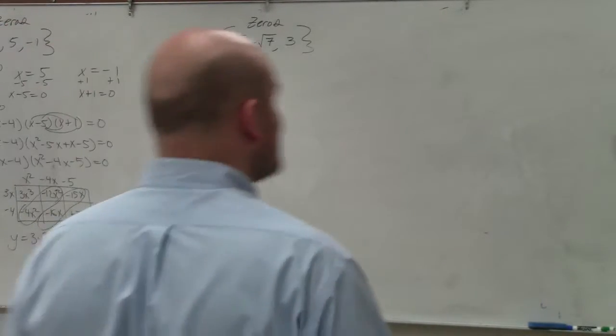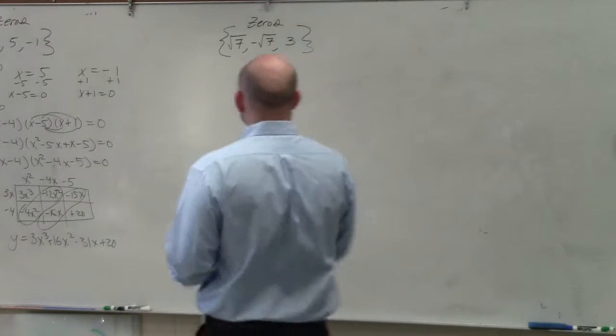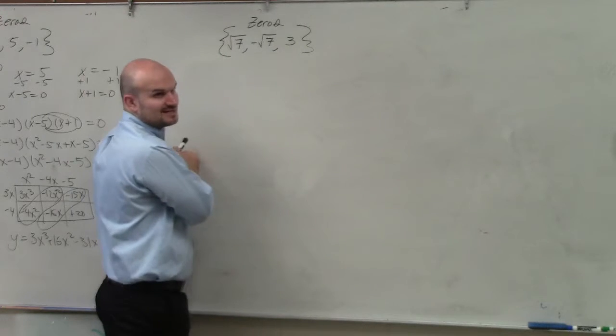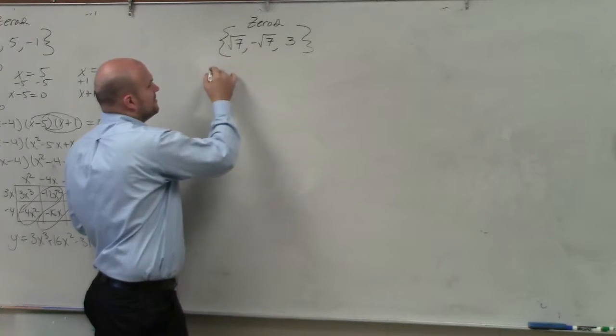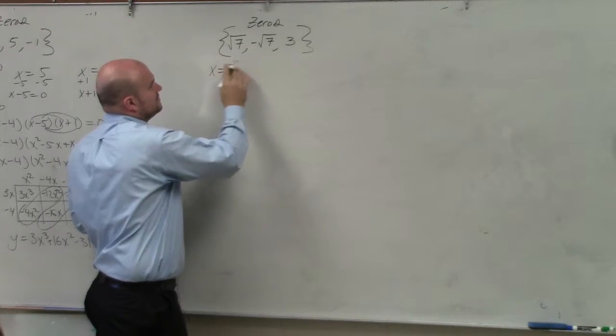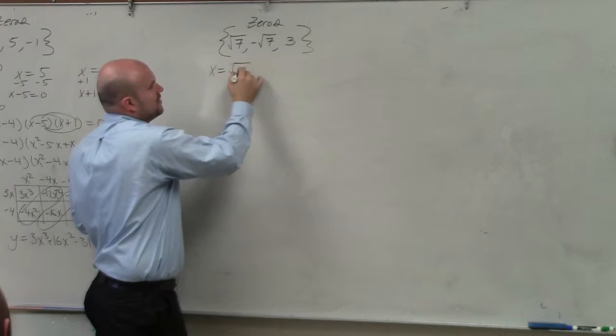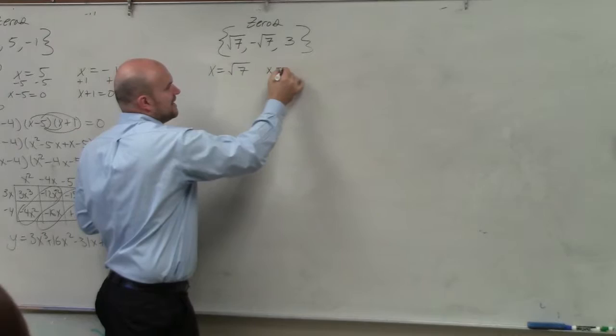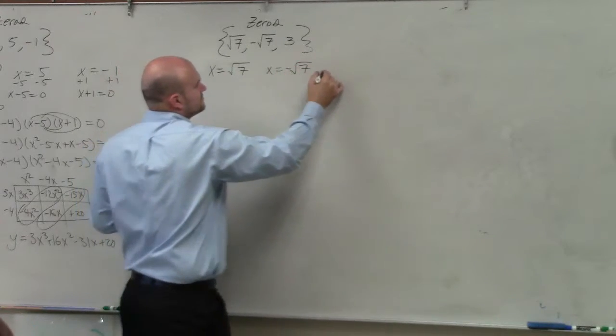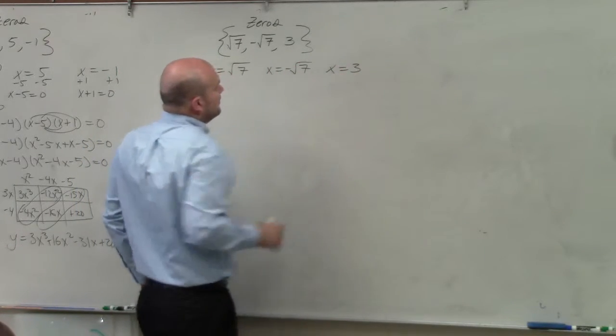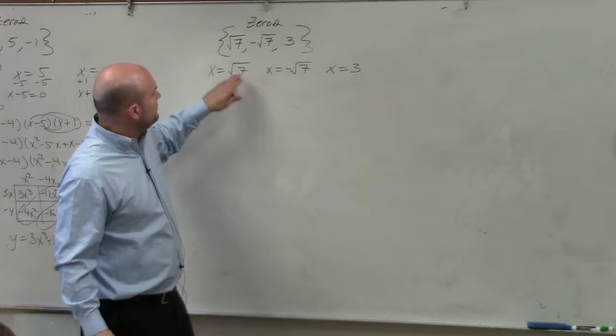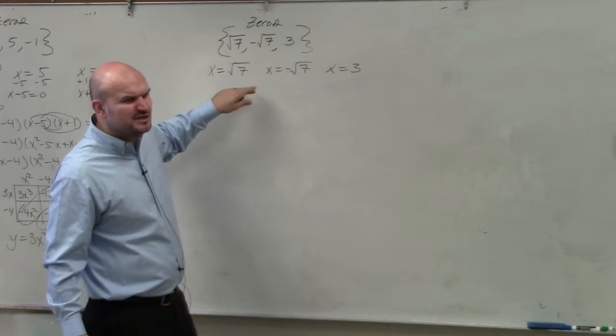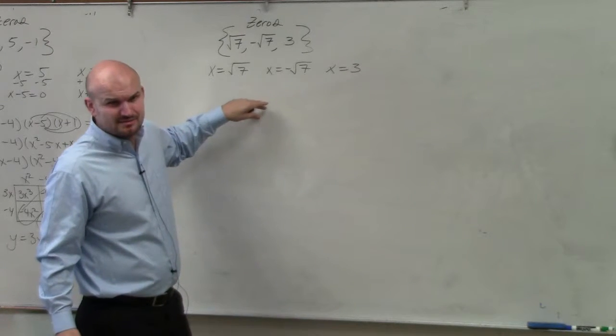All right, in this next example, we're going to do the exact same thing. Set them all equal to x. Do you guys notice how the square root of 7 and square root of negative 7, whenever you have the square root, remember how we always had to do square root equals plus or minus, right?